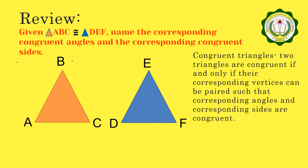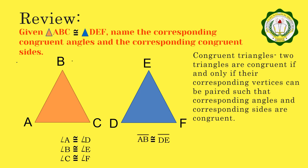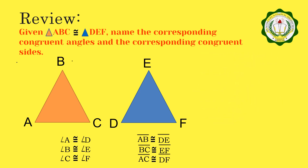For the angles, we have: angle A congruent to angle D, angle B congruent to angle E, angle C congruent to angle M. And for the sides, we have: side AB congruent to side DE, side BC congruent to side EM, and lastly, side AC congruent to side DM.